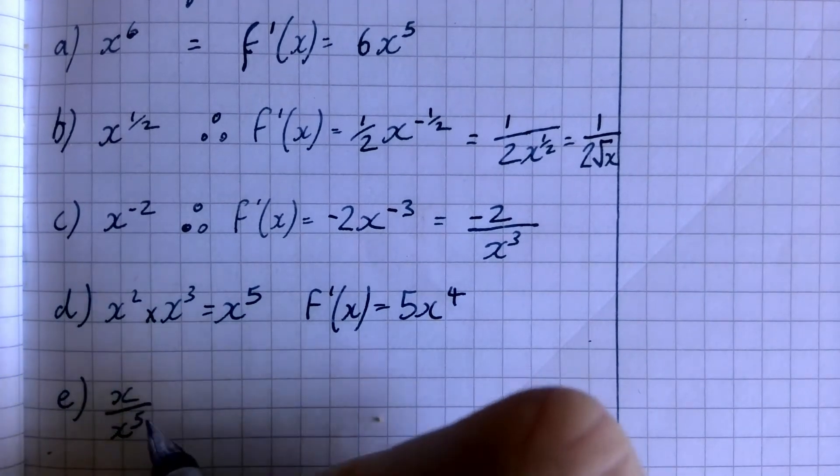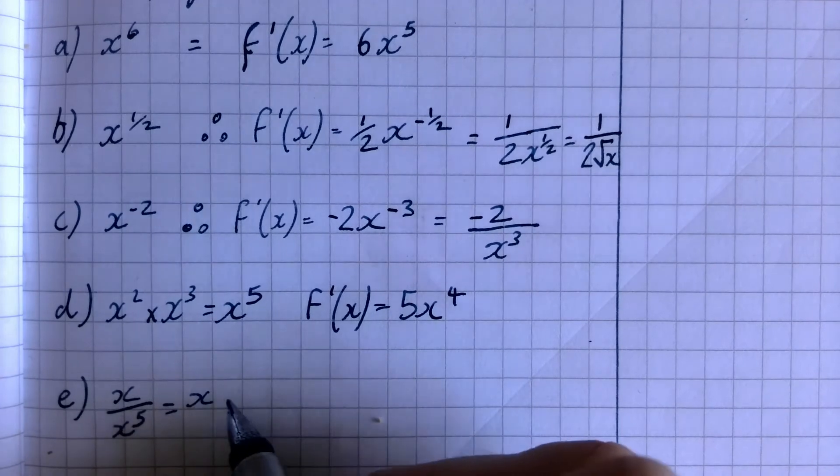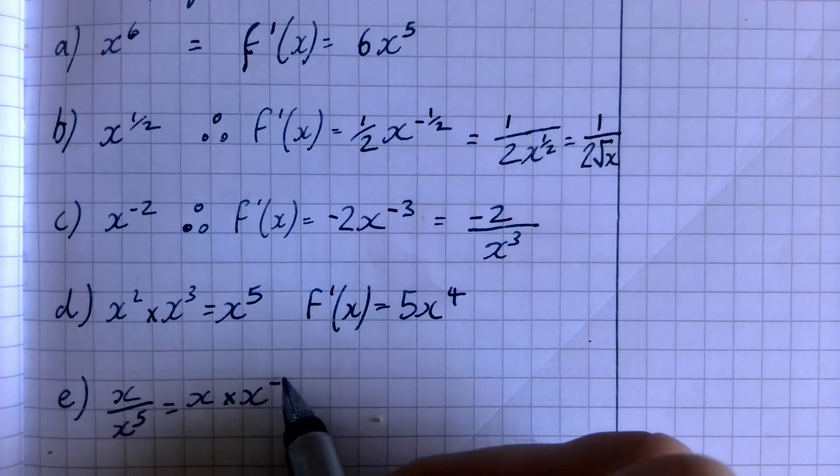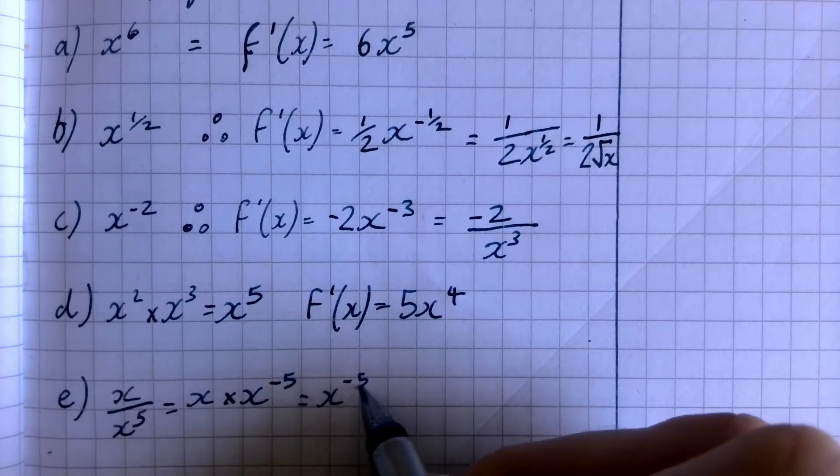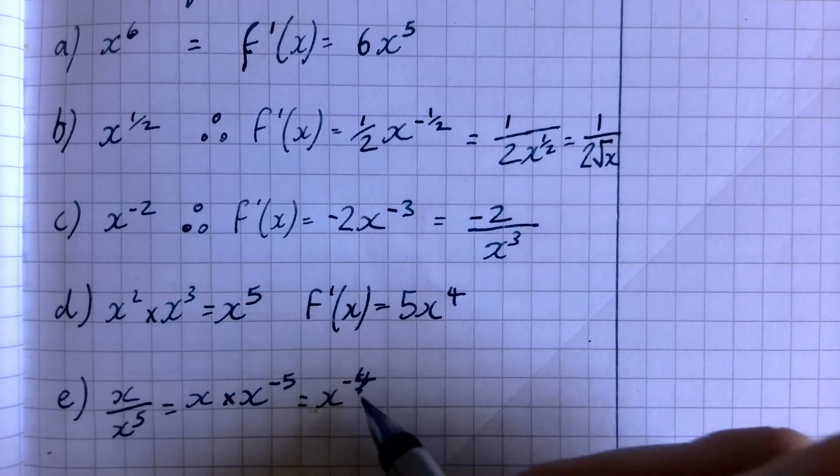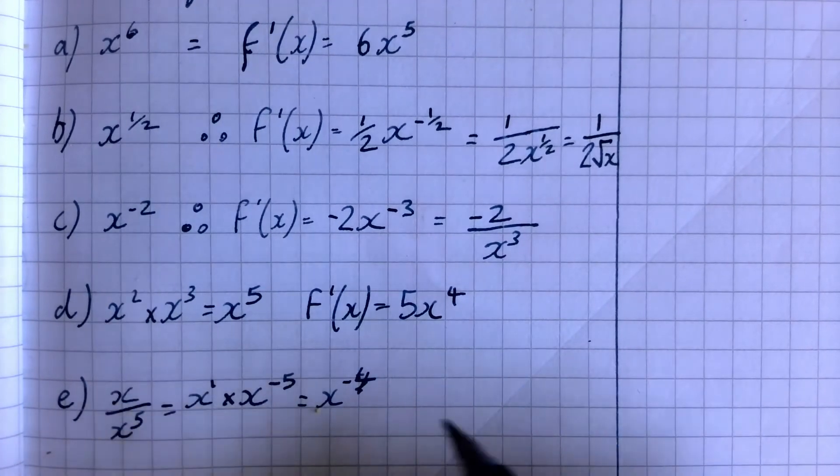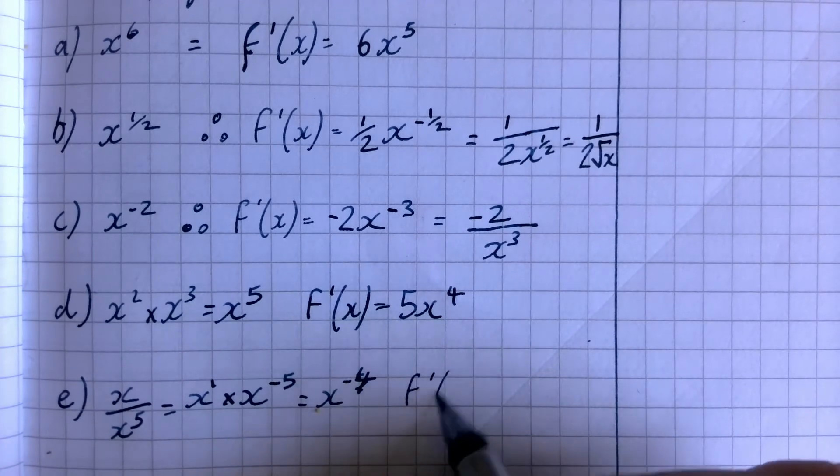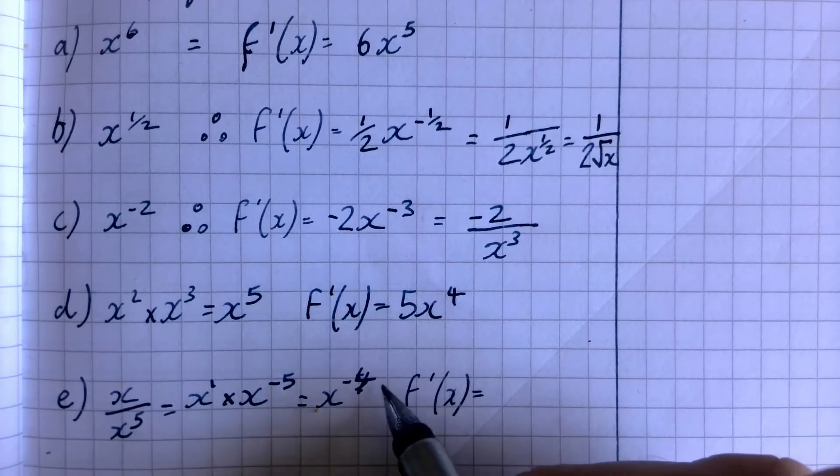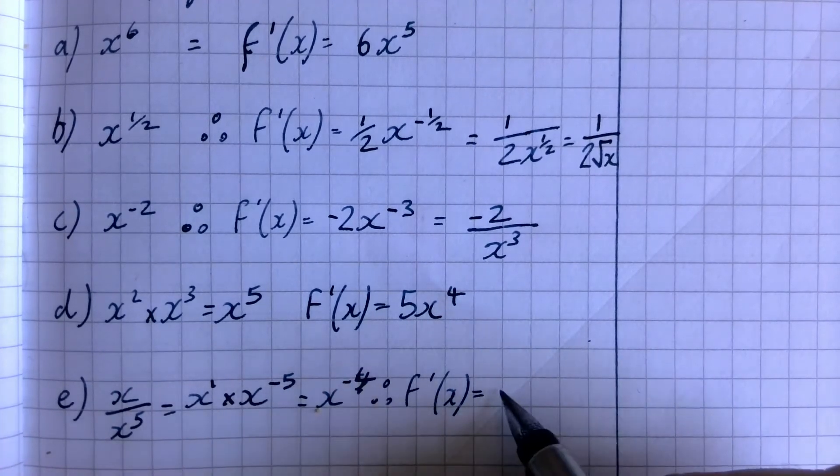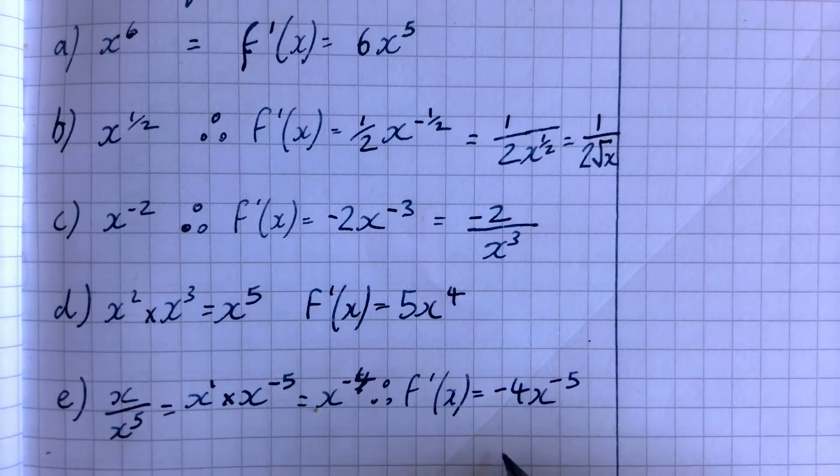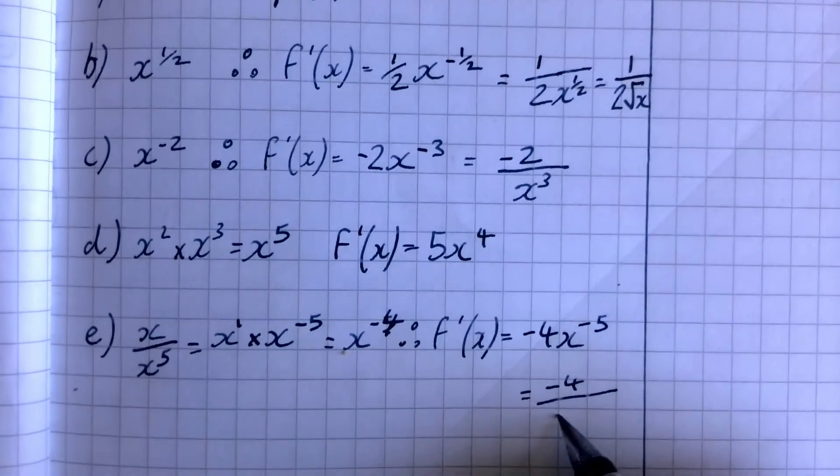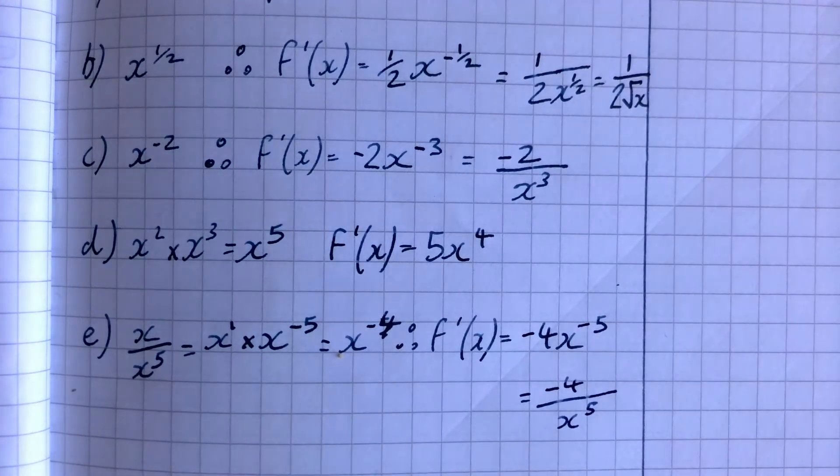The final one we've got here. That means x times x to the power minus five, doesn't it? Which is the same thing as we're saying x to the power negative four. Oh, negative four, because there's a power one there. One take five. So our derivative this time is going to be multiplied by the negative four, drop the power by one, so we could just call it that. Or we could say that is equal to minus four over x to the power five.